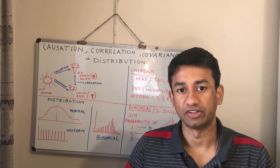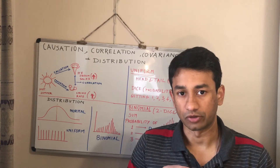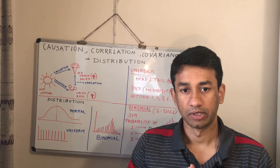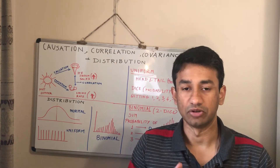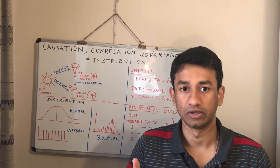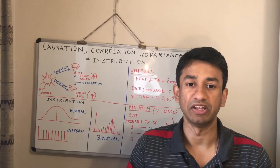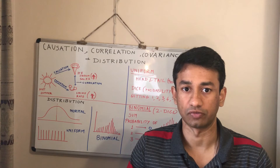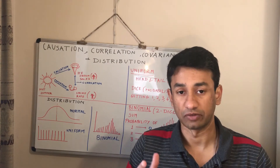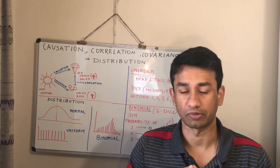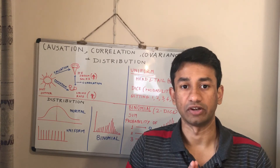First, we will see the details about causation, correlation, and covariance, especially about causation and correlation. What is the difference between them? Because I have seen many people confusing correlation and causation in many of the data science work that they are doing. Not only many people in general, but even in many research studies in the past, there has been some confusion of considering a correlation as a causation, which led to some confusions. So I want to talk about the difference between causation and correlation in detail.